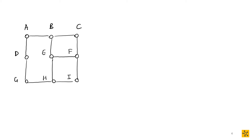In this example, let's use E as the starting vertex. So we activate E. The adjacent vertices to E are B, F, and H. We go through alphabetically, so we choose B as the next active vertex. Now the adjacent vertices to B are A and C, and we're going to select A. So A comes next and we activate A.